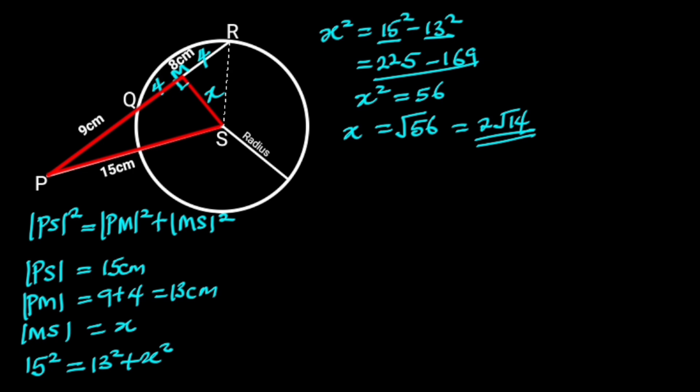Next, let's draw a straight line from S to R. Let's call this line Y. Notice that Y is the radius of the circle. Also, triangle MRS is another right triangle.